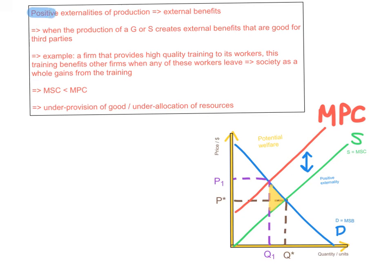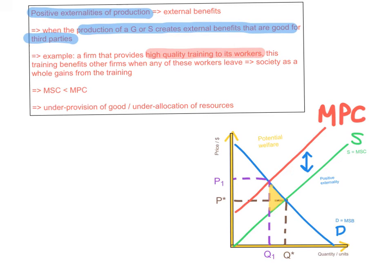Positive externalities of production occur when the production of a good or service creates external benefits that are good for third parties. For example, there's a firm that happens to provide high quality training to its workers. This training will benefit other firms because if any of those highly trained workers leave, they will go and benefit other firms who may not be able to pay for such high quality training. So by this firm investing in its workers, society as a whole gains from that training. In this situation, the marginal social costs are lower than the marginal private costs because the training costs the firm money, but the costs for society are lower because there's an external benefit.